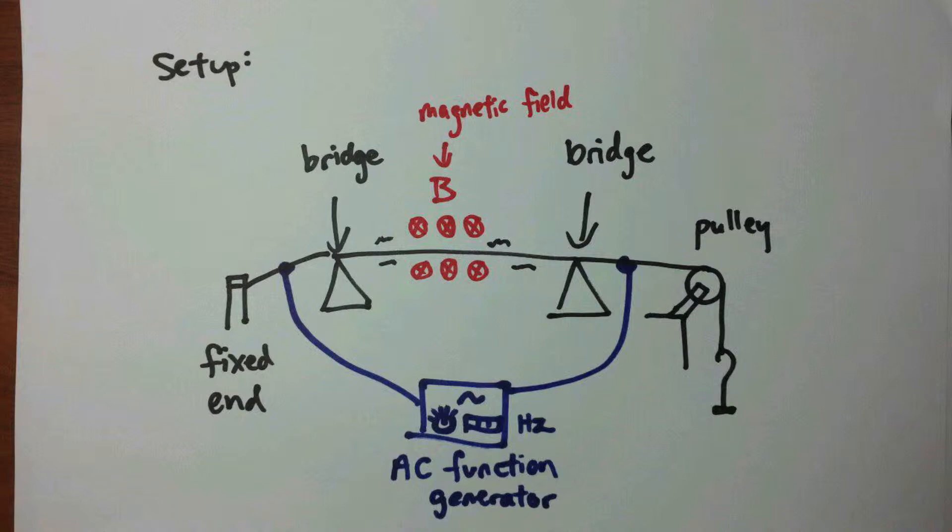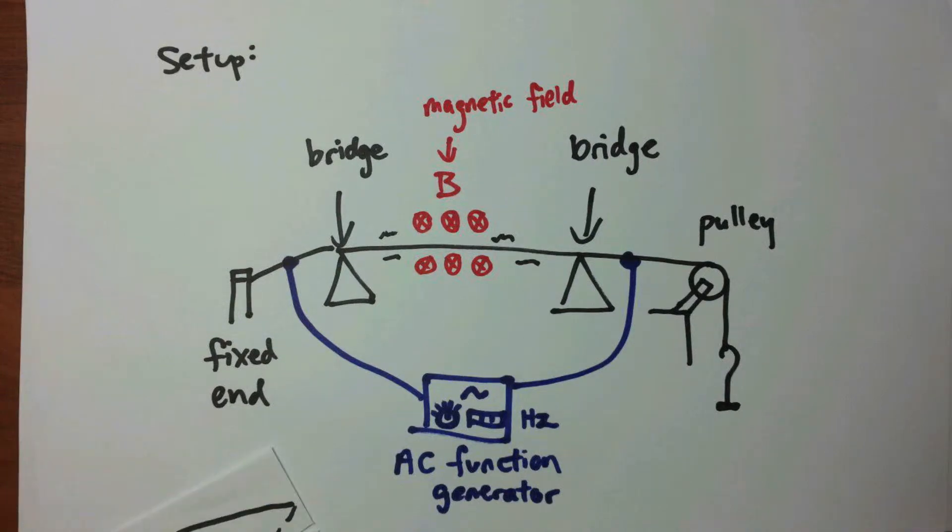An alternating current is produced by the function generator, and its frequency can be varied using the same apparatus. The function generator should have a display that enables us to read the frequency. The resulting magnetic force acting on the wire will be driving the oscillation of the wire at the frequency shown on the function generator.